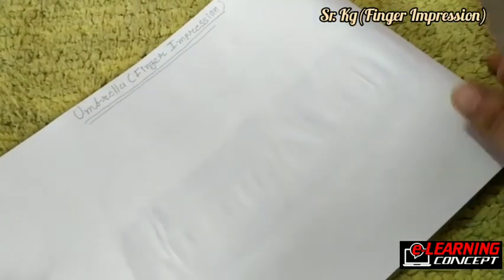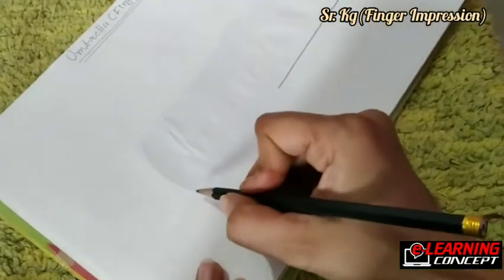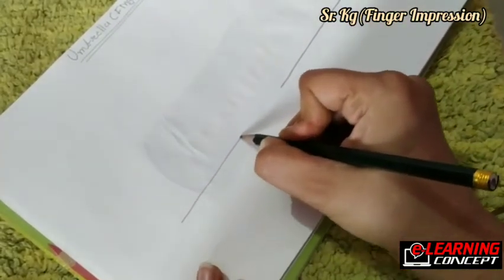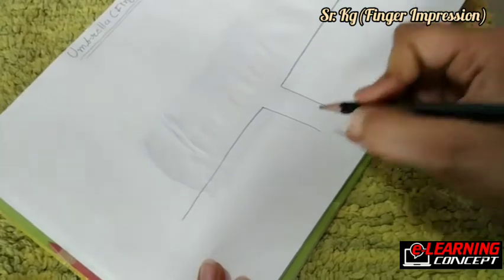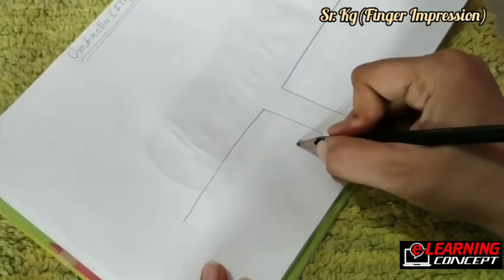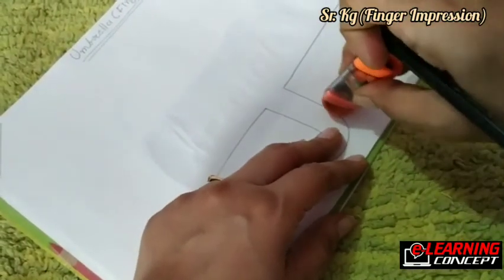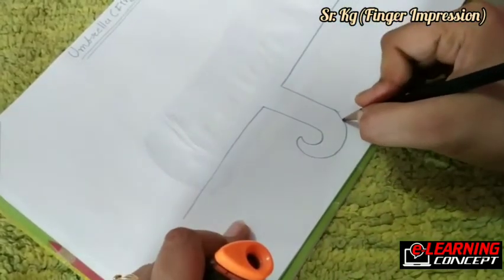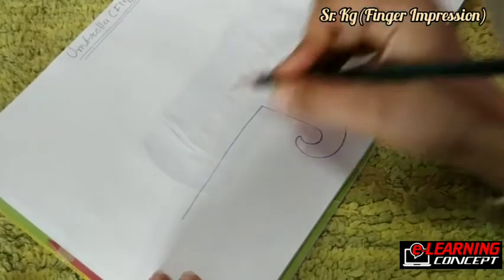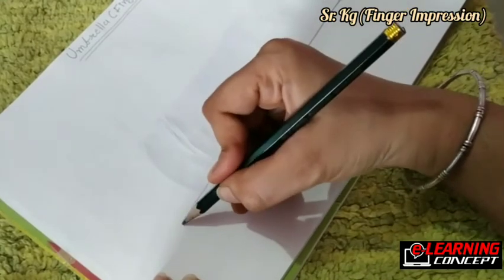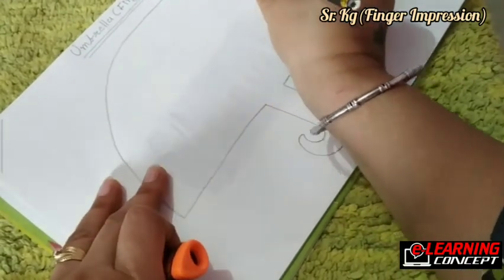Now make one slipping line, here also one slipping line. One standing line, one standing line. Then curve it like this. Rub the other portion. Start from here and finish here. We made one line, start from here like a big C, curve line. Finish.